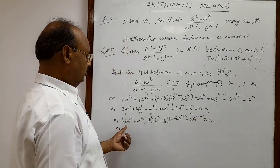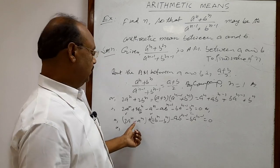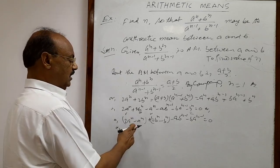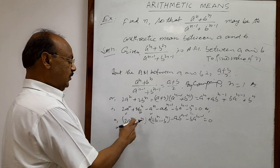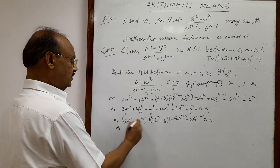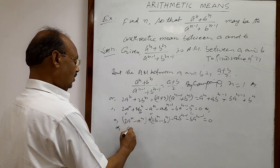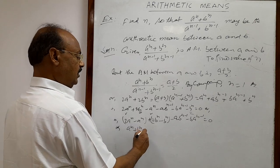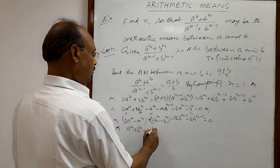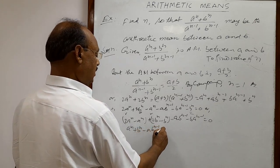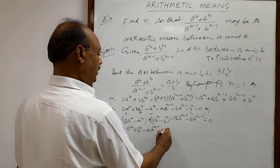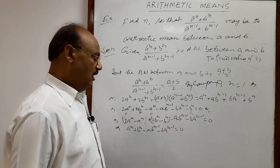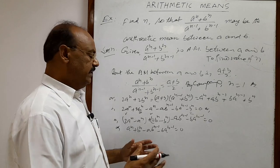Now, 2x minus x is x. So 2 a to the power n minus a to the power n is equal to a to the power n. So we can subtract: a to the power n plus b to the power n minus a times b to the power n minus 1 minus b times a to the power n minus 1 equals 0.